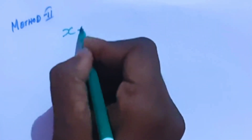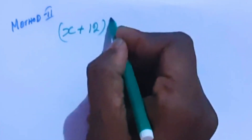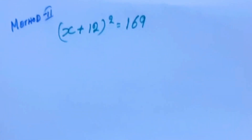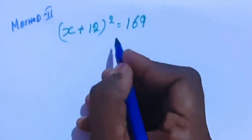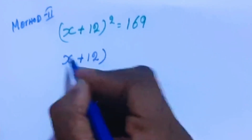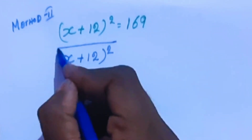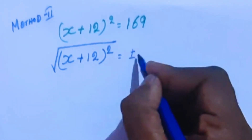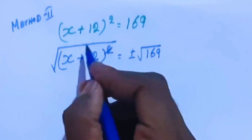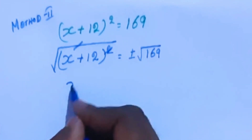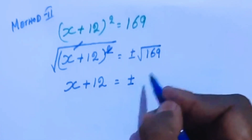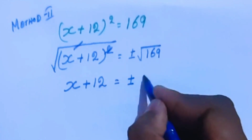Method 2. The equation is x plus 12 whole square equal to 169. In this method, we are going to take the square root on both sides. So x plus 12 whole square under square root equals plus or minus square root of 169. The square and square root cancel each other.